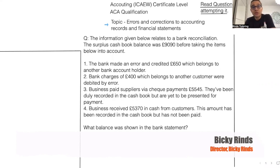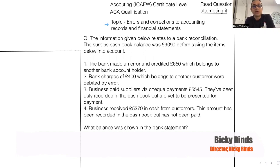The information given below relates to bank reconciliation. The surplus cash book balance was 9090 before taking the items below into account. First, a bank made an error and credited 650 which belongs to another bank account holder. Second, bank charges of 400 which belongs to another customer were debited by error. Third, the business paid suppliers by check payments of 5545 — duly recorded in the cash book but yet to be presented for payment. Fourth, the business received 5370 in cash from customers, recorded in the cash book but not yet paid in. The question is: what balance was shown in the bank statement?